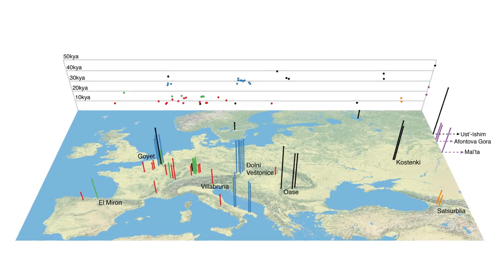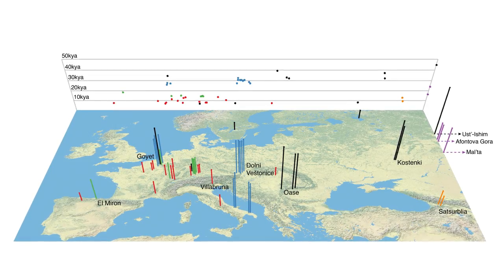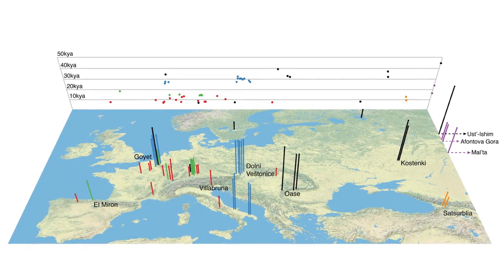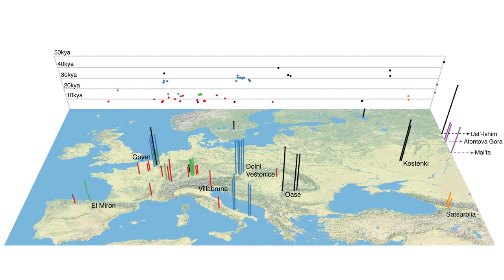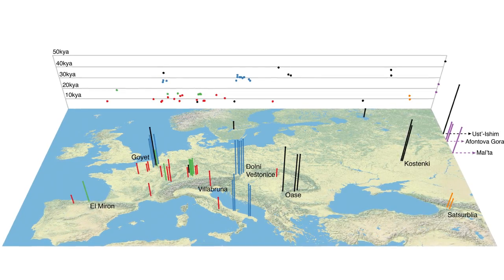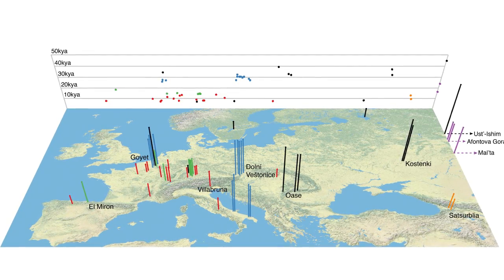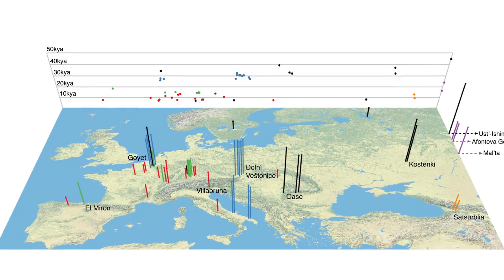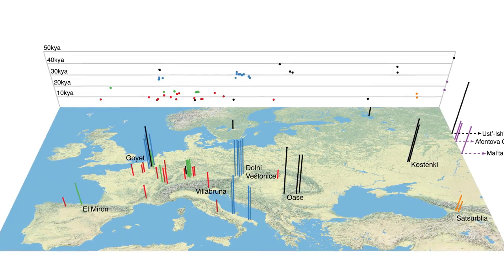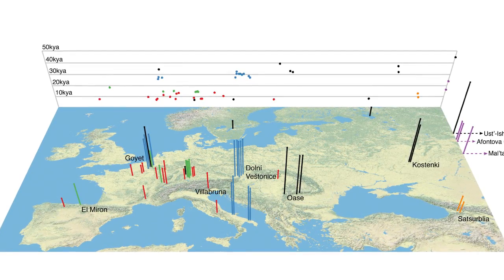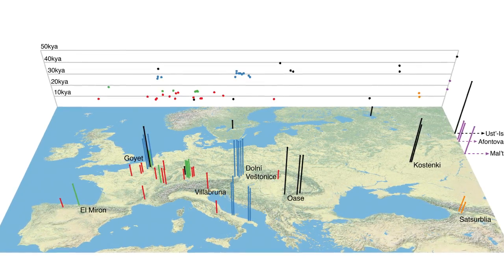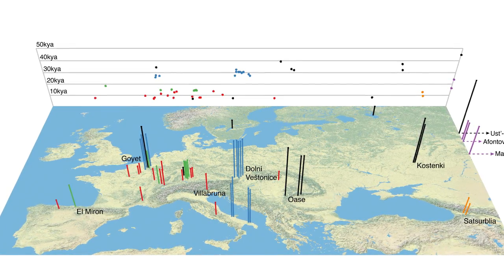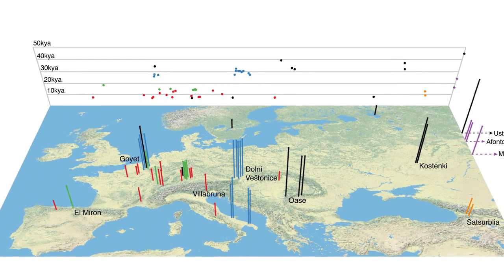That changes everything. We made a map to show all the samples. What you'll see is bars of very different heights — little short bars corresponding to samples maybe 10,000 years old, and very tall bars corresponding to samples as old as 45,000 years old. The coloring of each bar corresponds to the genetic grouping assigned to the samples, guided by the genetic data alone.